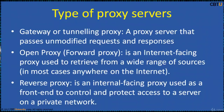There are many open proxies on the internet. An anonymous open proxy allows users to conceal their IP address while browsing the web or using other internet services. A reverse proxy, or surrogate proxy, is an internal-facing proxy used as a front end to control and protect access to a server on a private network.